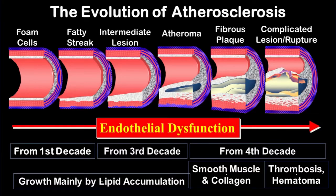Regarding the evolution of atherosclerosis — it is said that atherosclerosis sets up in the fetus itself, in the womb itself. Initially you have the formation of the foam cell, fatty streak, and the intermediate lesion, which starts from the first decade up to the third decade.